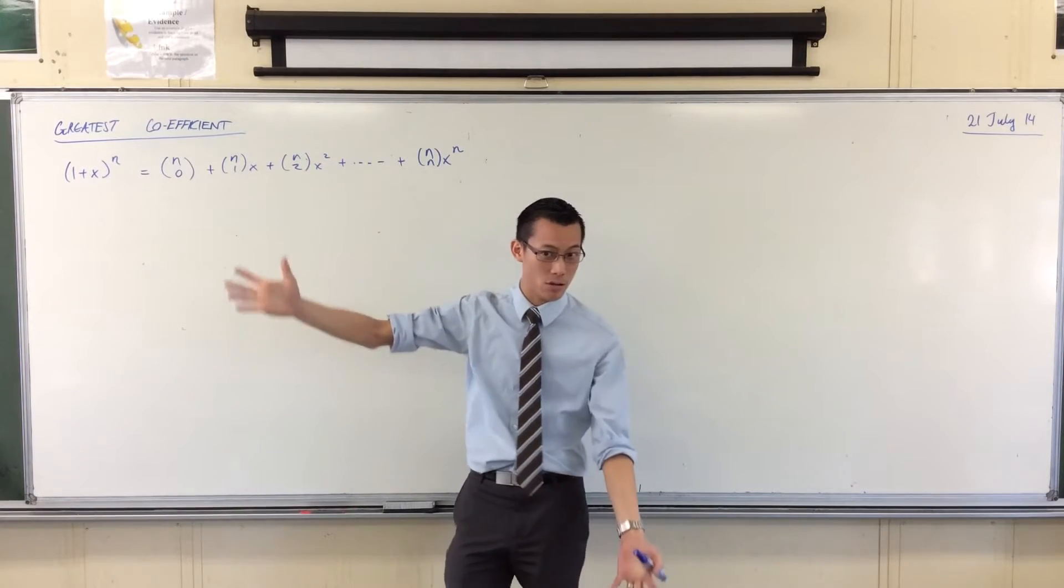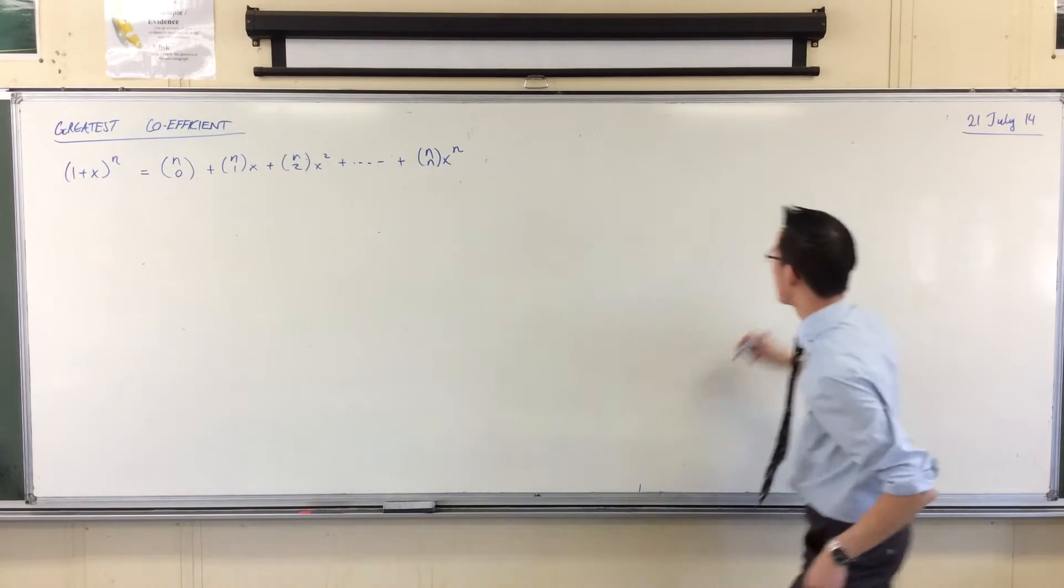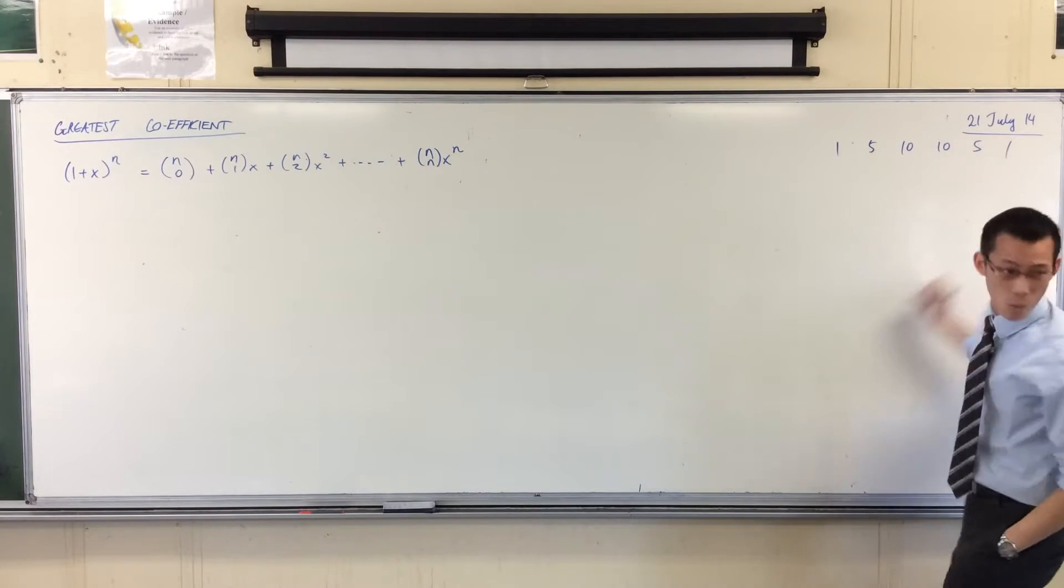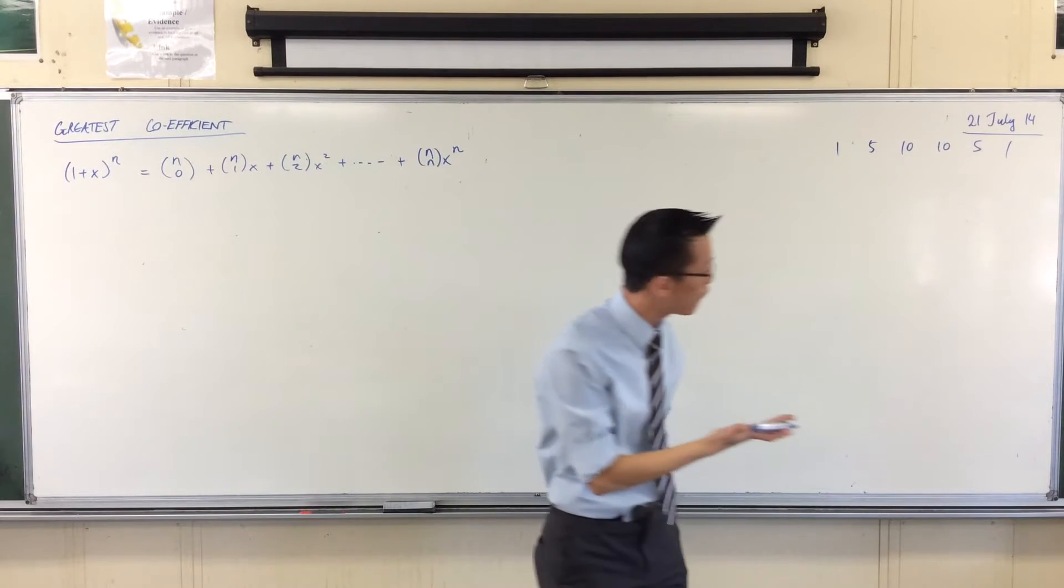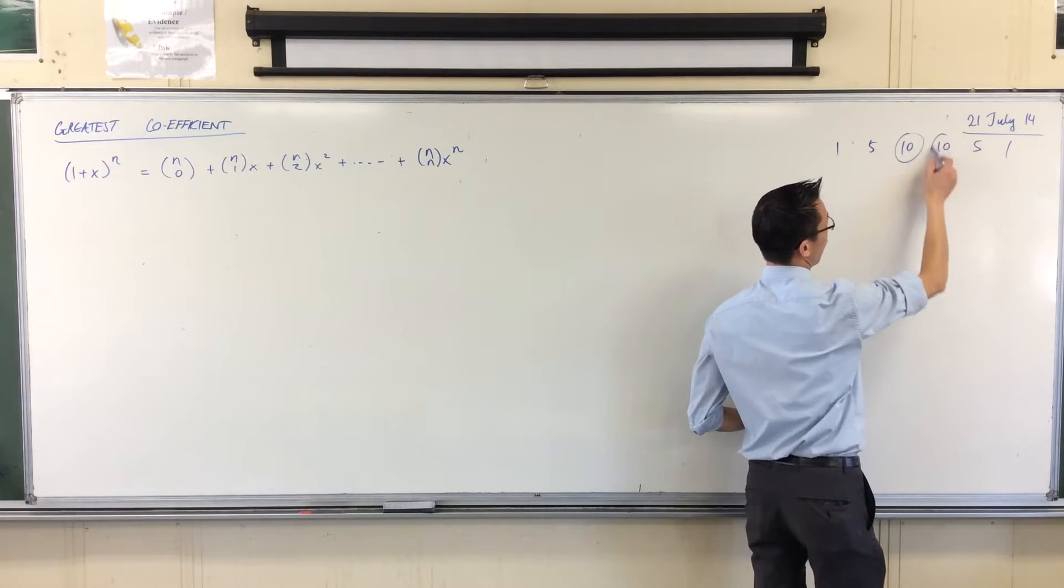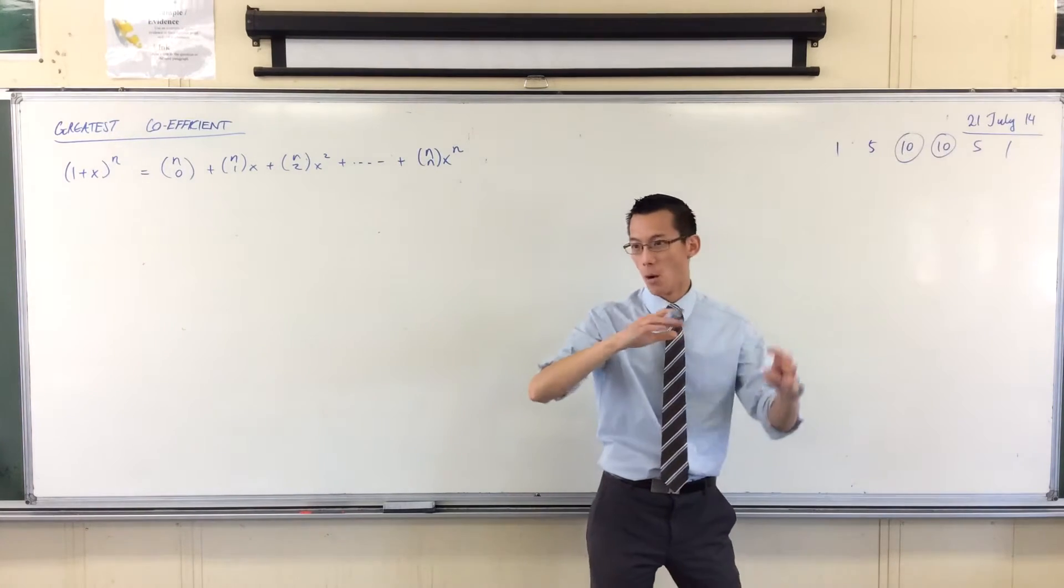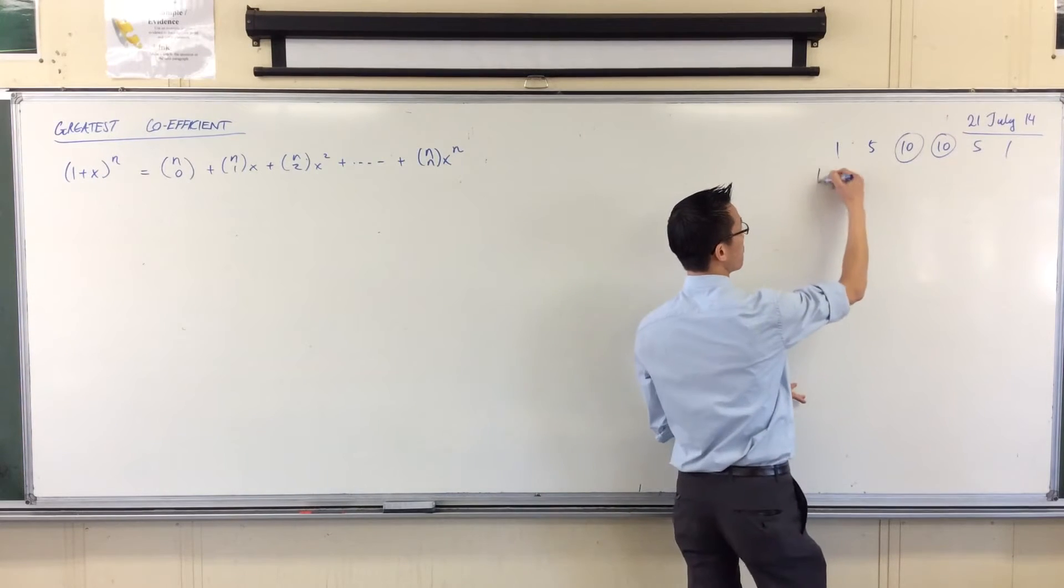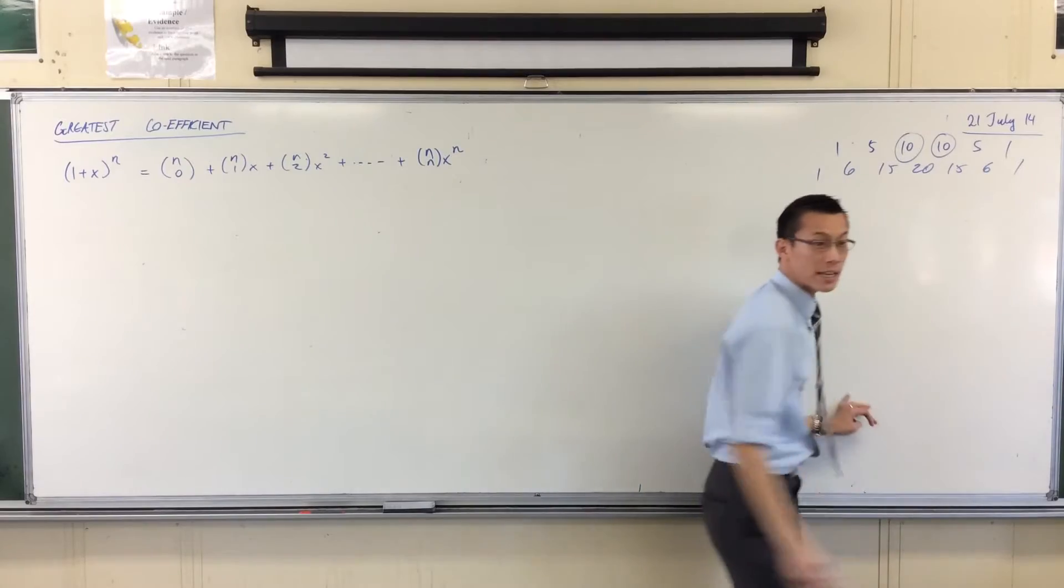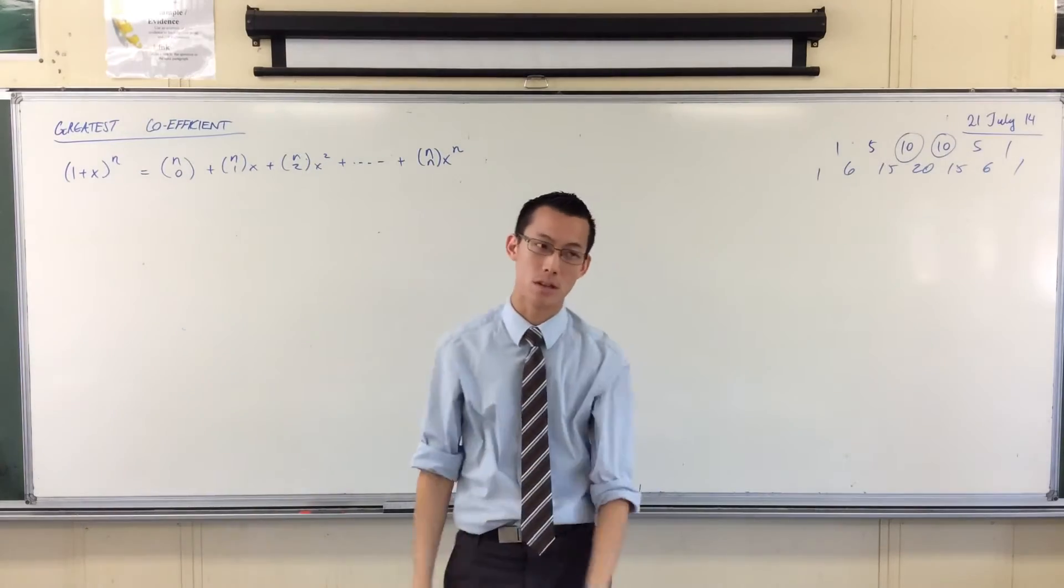And we did this with Pascal's triangle. For example, the row we looked at a lot was 1, 5, 10, 10, 5, 1. So you can see in this case, if n were equal to 5, there are our two greatest coefficients. It's in the middle, that's the important thing.